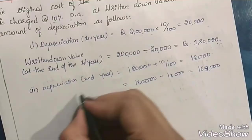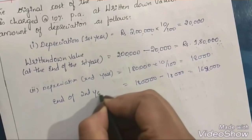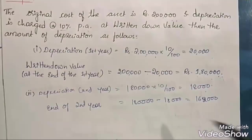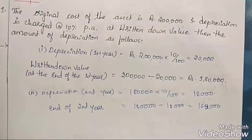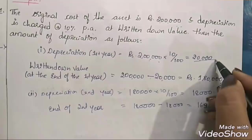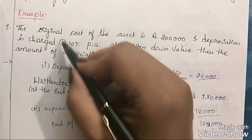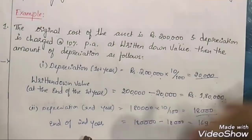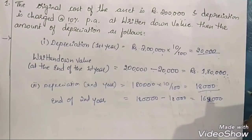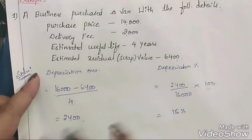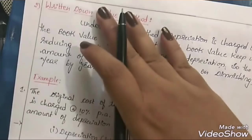For the third year, depreciation is 10% on Rs. 1 lakh 62,000, giving Rs. 16,200. The depreciation amounts are going on diminishing: Rs. 20,000, then Rs. 18,000, then Rs. 16,200. The rate remains 10% every year, but the amount decreases — this is written down value method. In contrast, under straight line method, Rs. 2,400 is charged for all four years — the amount does not change. This is the key difference between the two methods.